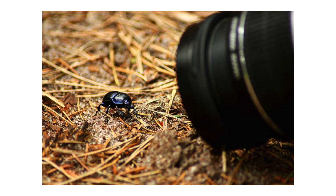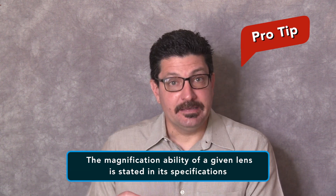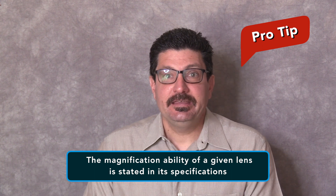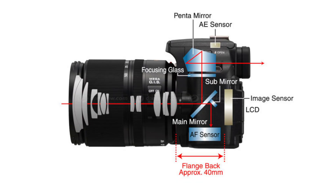Some of the greatest challenges in macro photography arise from the simple fact that we shoot from very close distances. Thus, the magnification of our subject becomes of primary importance. The magnification ability of a given lens is stated in its specifications, but in my experience, few photographers or videographers understand the meaning and implications of this designation. To understand the concept of magnification, it's worth taking a brief look at how a photo or video image is created.